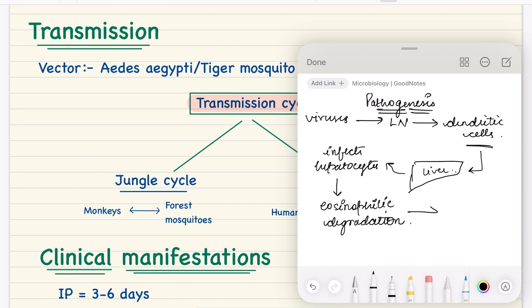The eosinophilic degradation causes massive release of cytokines. That is all you need to know about pathogenesis.